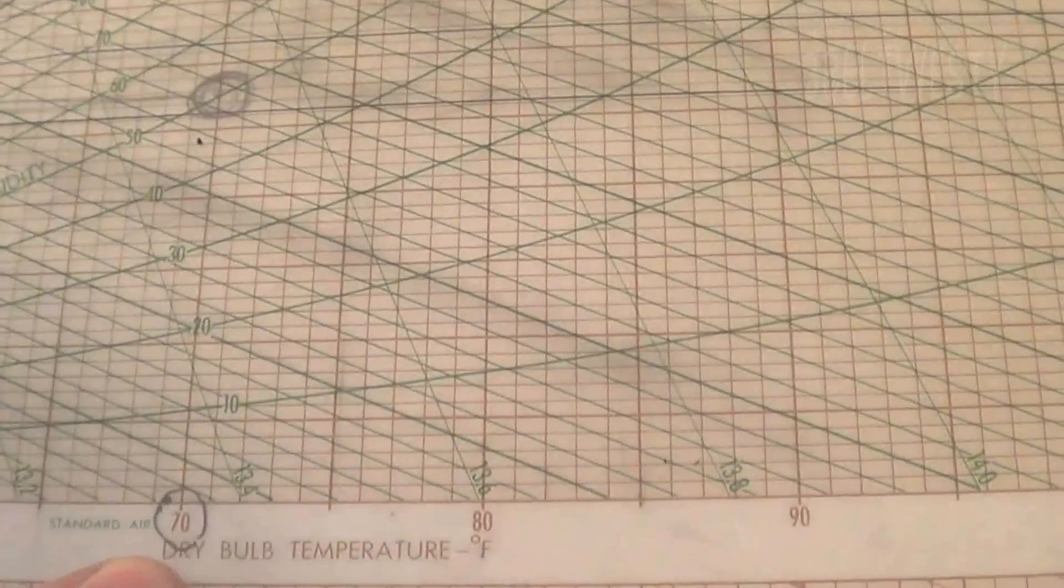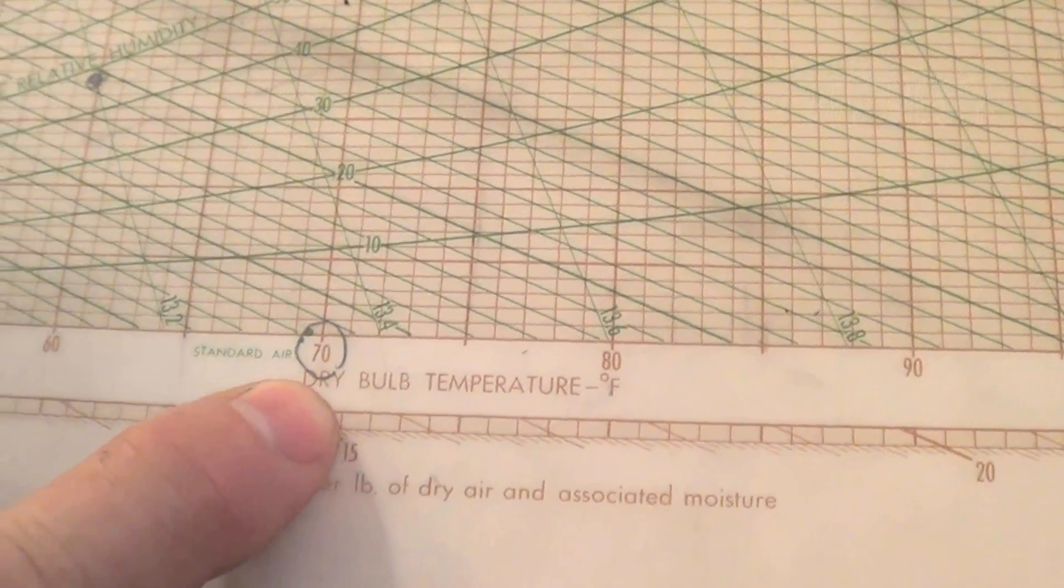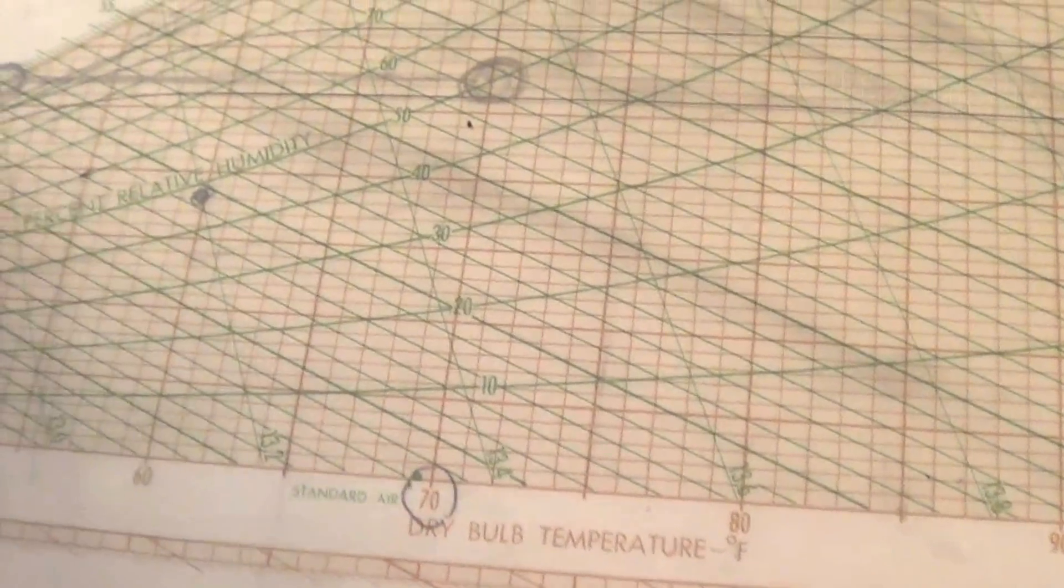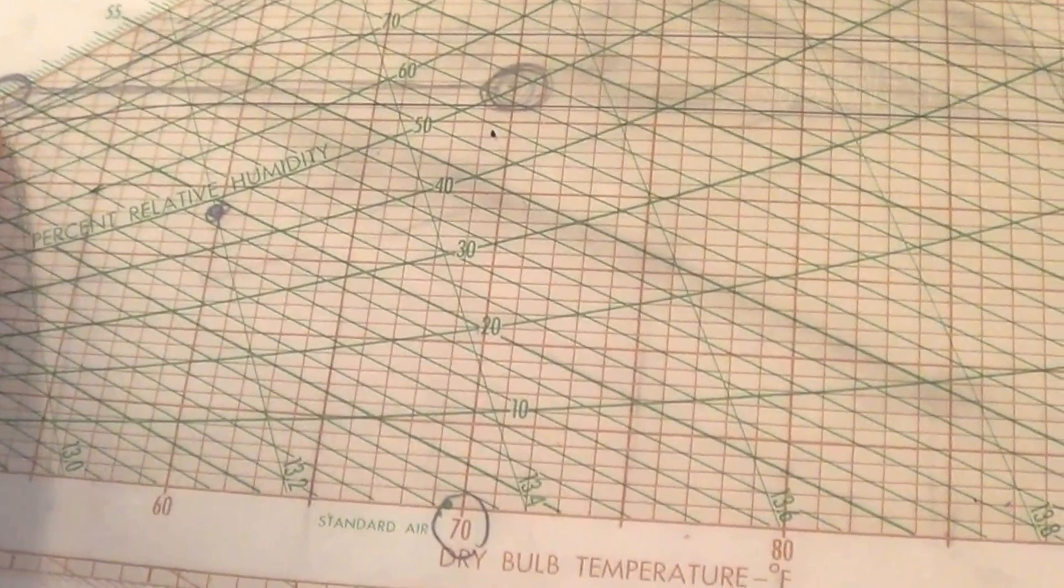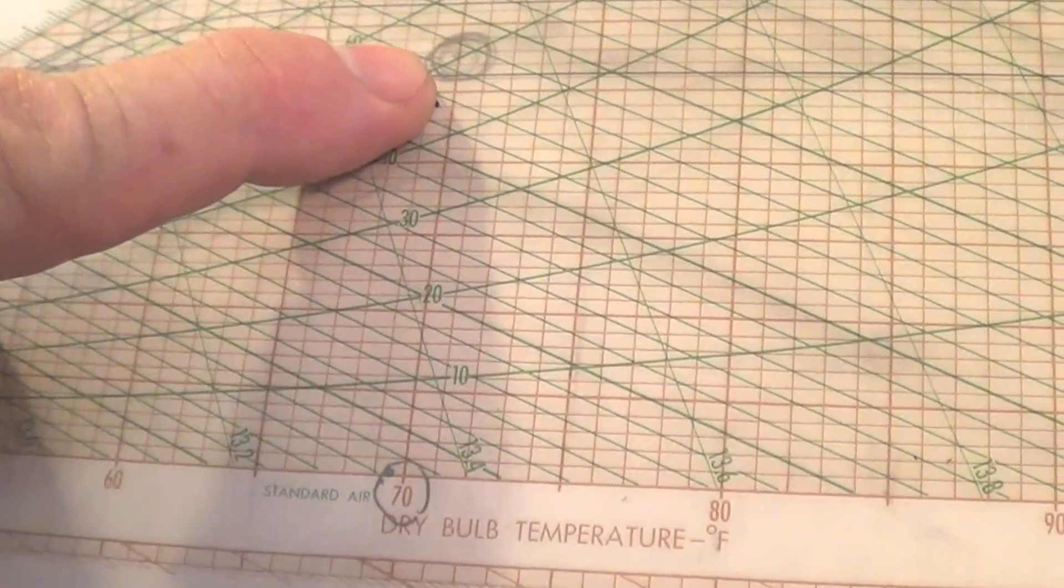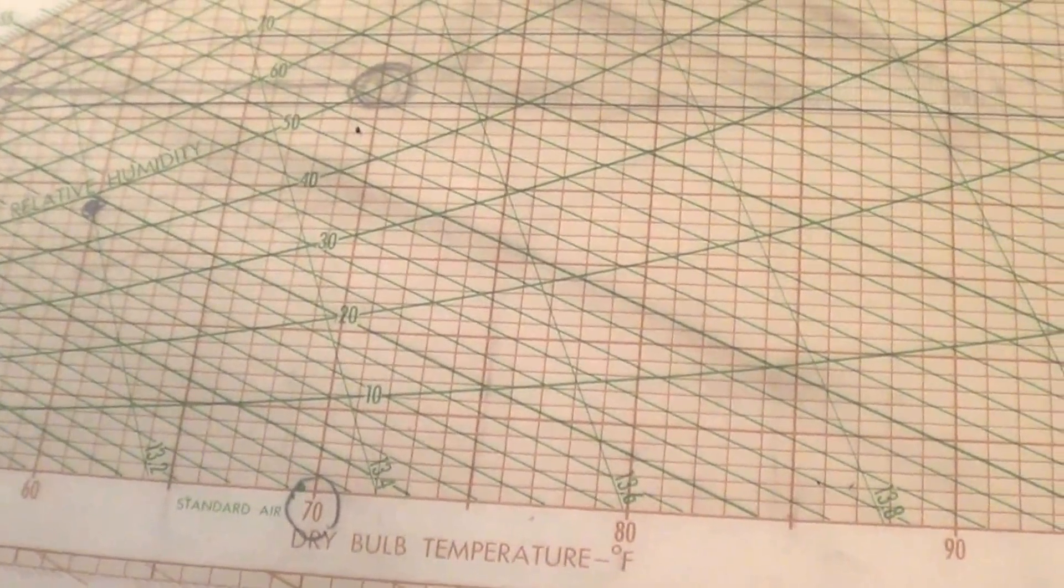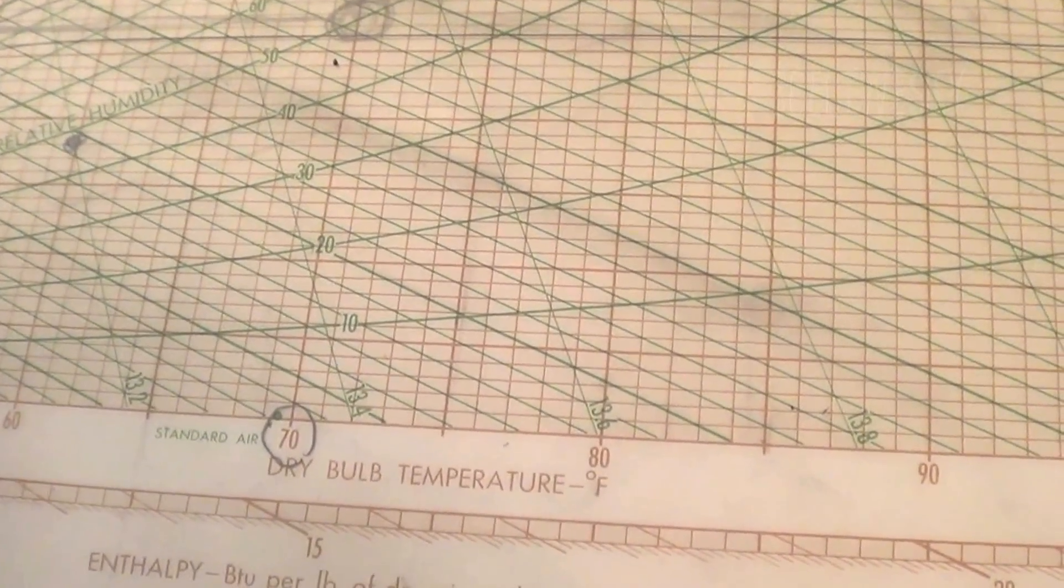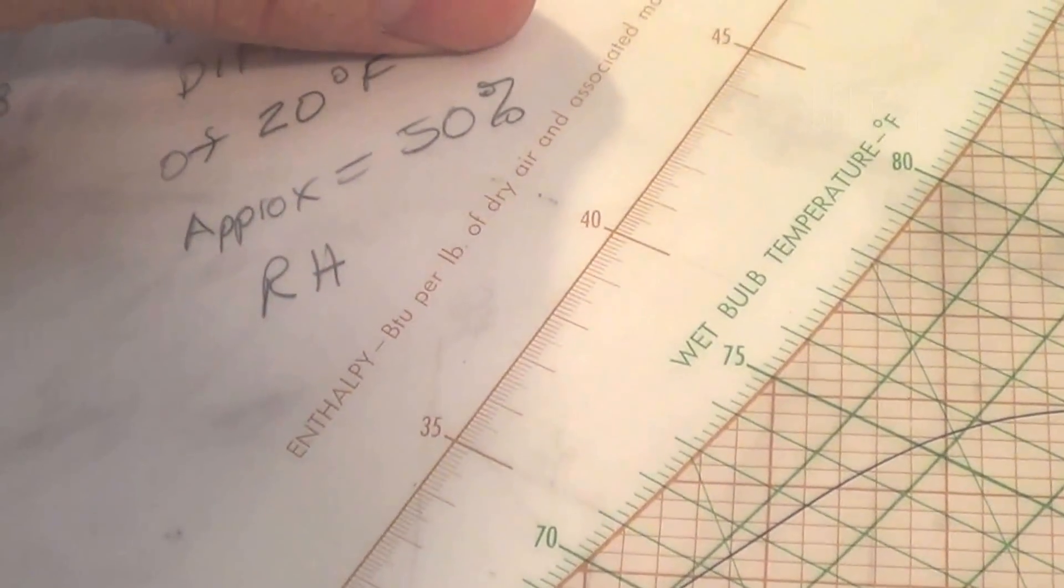If I go down here to a dry bulb temperature of 70 degrees and a dew point of 50, you intersect them, you've got 50% RH. Over a fairly decent range, if you have a 20 degree differential, you have roughly a 50% RH.